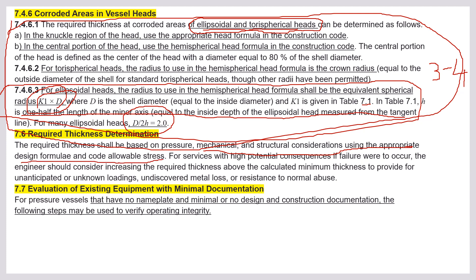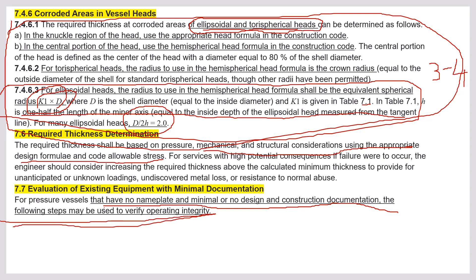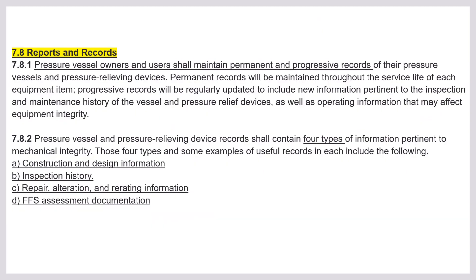For evaluation of existing equipment with minimal documentation — for pressure vessels that have no nameplate or minimal or no design and construction documentation — the following steps may be used to verify operating integrity. The specific steps will be covered in the next slide.